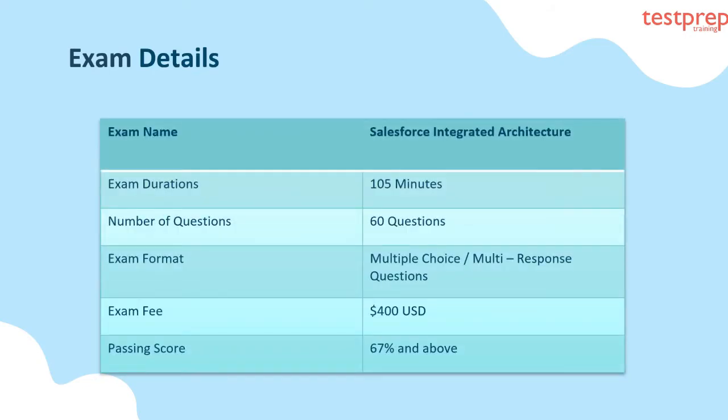Now we will discuss about exam details. The exam includes 60 questions. The questions will appear in the form of multiple choice or multiple select format. The candidate will get 105 minutes to complete the exam. Passing marks for this exam is 67%. The candidate has to pay $400 US dollars plus applicable taxes as the registration fee.